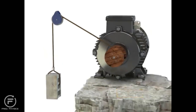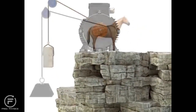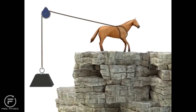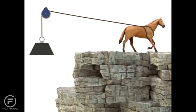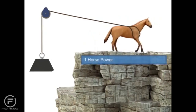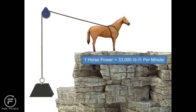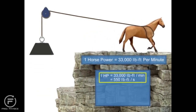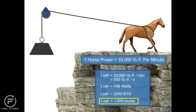Horsepower is defined as the rate at which work is accomplished. Years ago, before motors were invented, most work was accomplished manually. It was estimated that one horse could accomplish approximately 33,000 pound-foot of work per minute, and thus the term horsepower was born. In modern terms, horsepower is simply another unit of measurement for power, and can be translated into watts, BTUs, joules, or any unit of power. Units that measure motor power are typically in horsepower or watts.